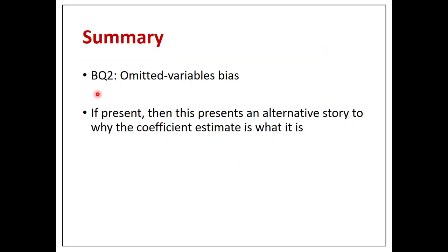In summary, this represents big question two: omitted variables bias. If it's present, it presents an alternative story — another reason why the key X variable and the dependent variable may be moving together. If it's not ruled out, that gets in the way of claiming that a coefficient estimate is an unbiased estimator for the true causal effect. The next video will be on self-selection bias.